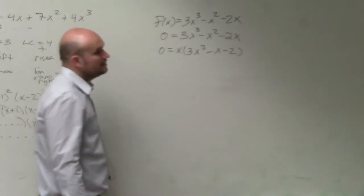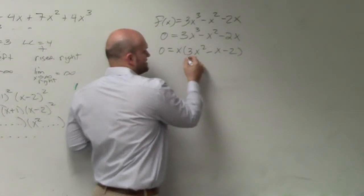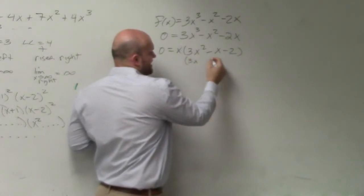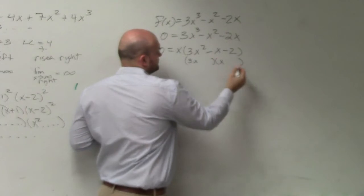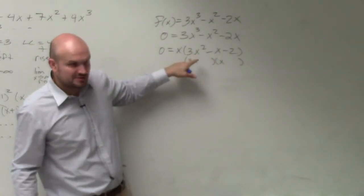Now I want to see, can I continuously factor this? If I'm going to factor that, it's going to factor into two binomials. And I know 3x times x is the only thing that's going to give me 3x squared.